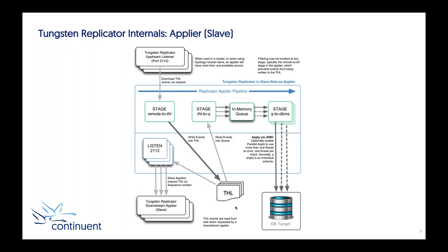The critical part about this pipeline is that we can also change the information as it goes through. With a typical system, you might be able to extract information and apply it to a target and do basic things — skip columns, skip individual tables, skip databases. What we can do is go one stage further: we can actually reformat and modify the information as it goes through the pipeline before it gets applied down into the target database. From a database perspective, this means we can change and format that data in a way that suits our target system.